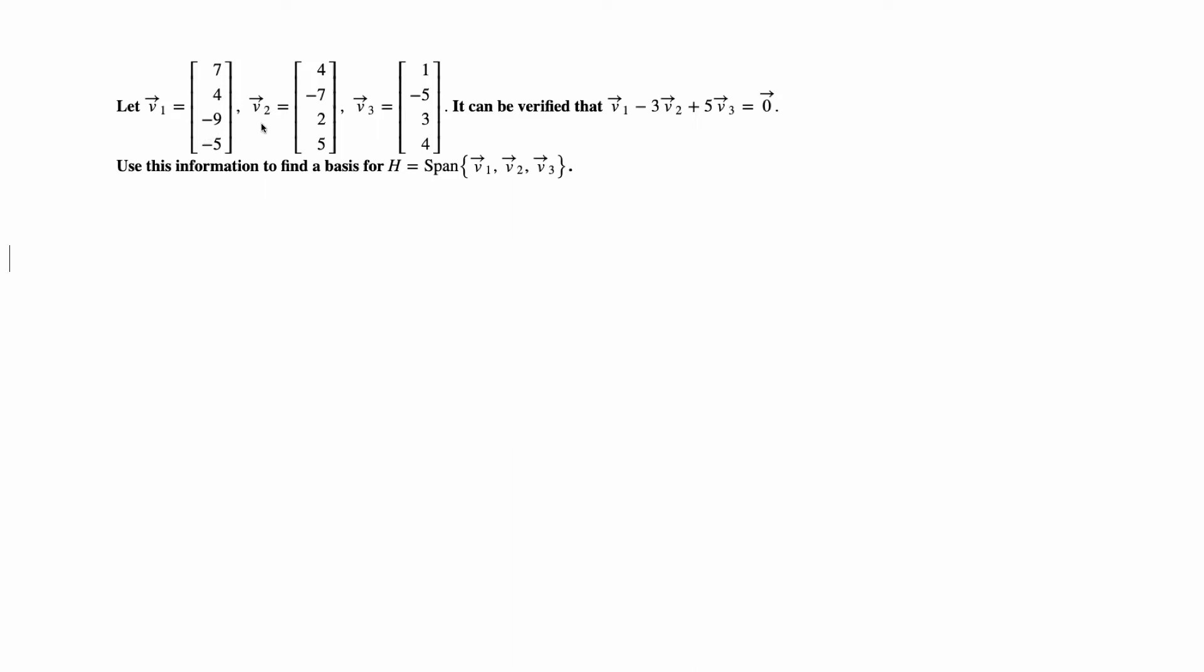Let v1, v2 and v3 be given as these three vectors, and we can verify that v1 minus 3 times v2 plus 5 times v3 equals the zero vector.